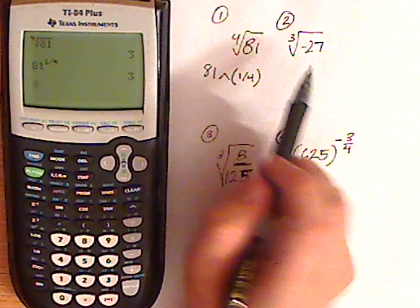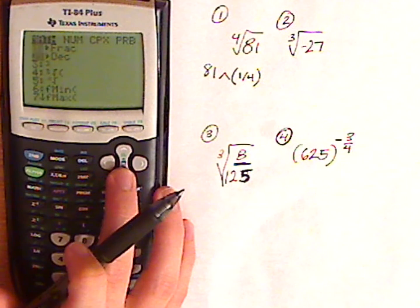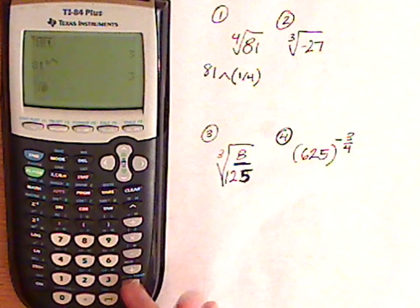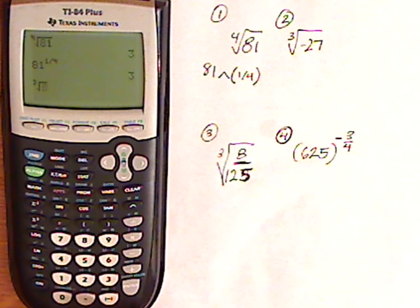Alright, for the next one, if you go to Math it automatically has the cube root, which is number 4. So you can go to cube root, then push the negative sign, don't push the minus sign. It's going to come up as an error if you push the minus sign. So you want to push the negative sign. So negative and then 27.